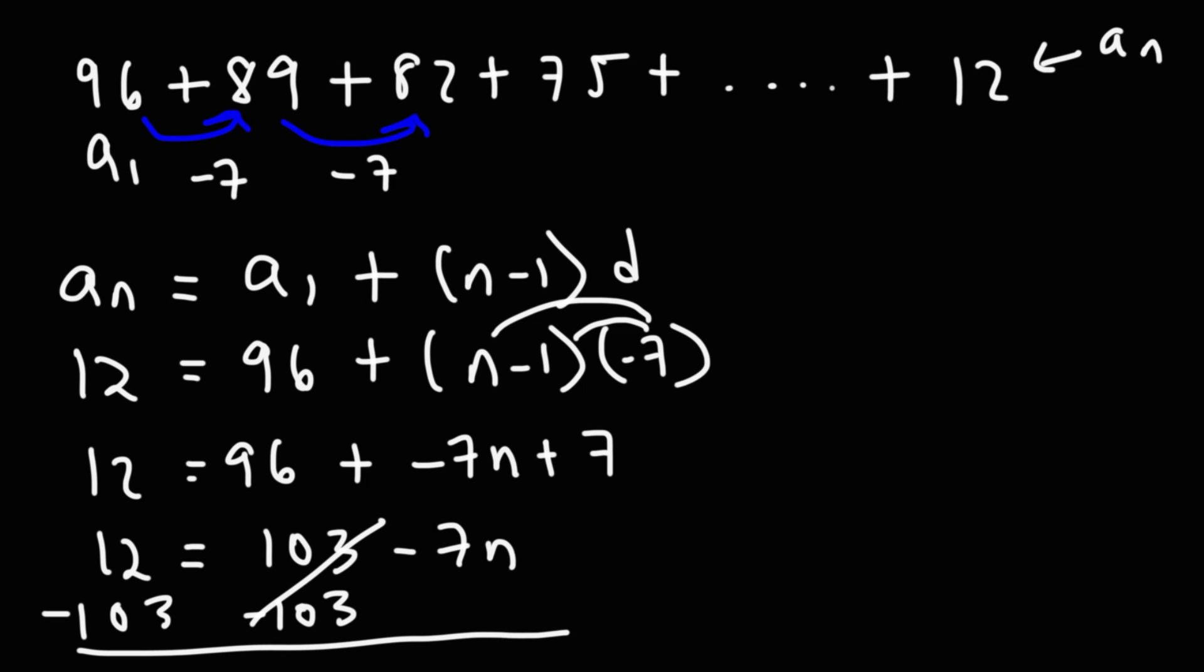And now let's subtract both sides by 103. 12 minus 103 is negative 91. And then we could divide both sides by negative 7. And that is going to give us our n value, which in this problem is 13. So 12 is the 13th term or a sub 13.